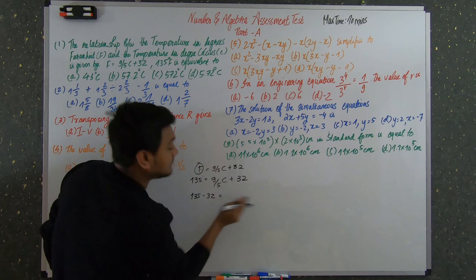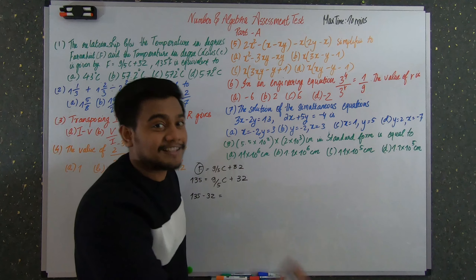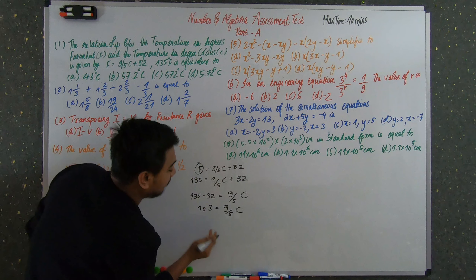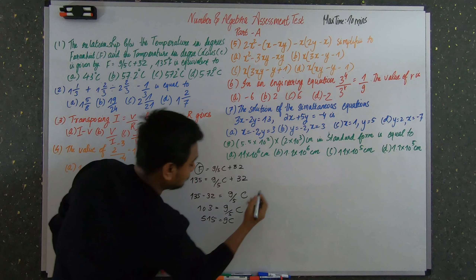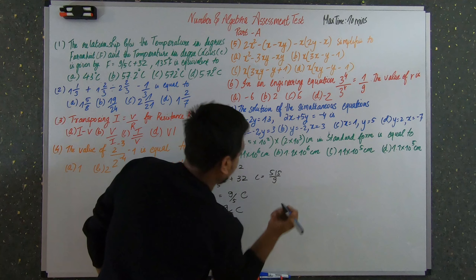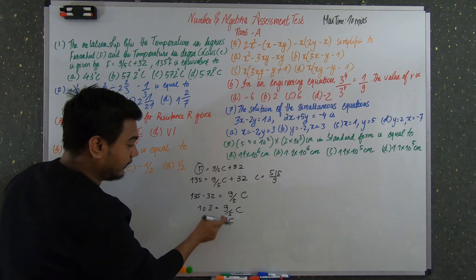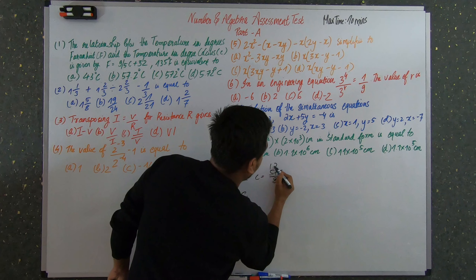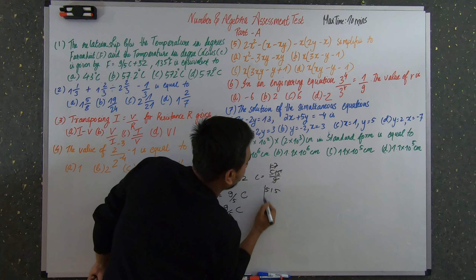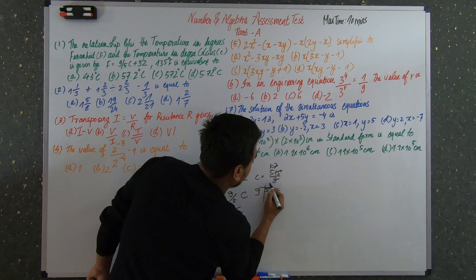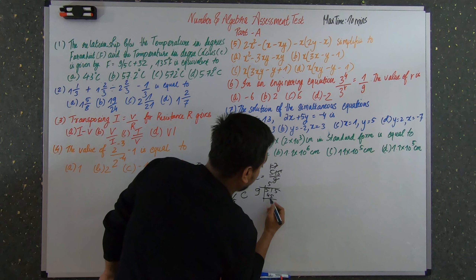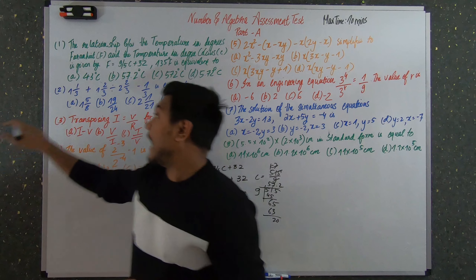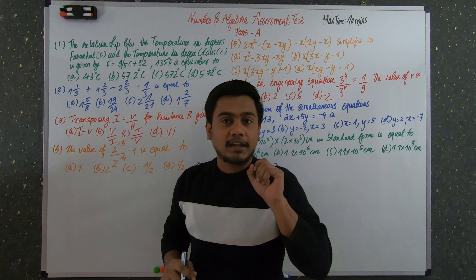Substituting 135 into F = (9/5)C + 32: take constant terms to one side, so 135 − 32 = (9/5)C, giving 103 = (9/5)C. Then 103 × 5 = 515 = 9C, so C = 515/9. Using long division: 9 × 57 = 513, remainder 2, giving approximately 57.2.